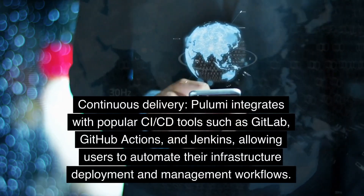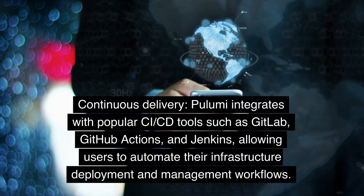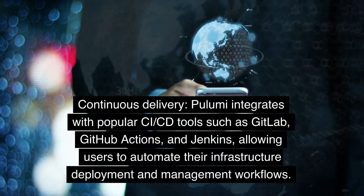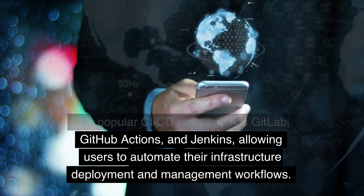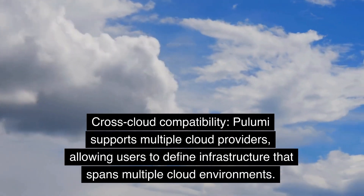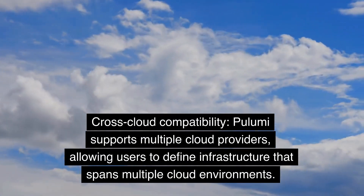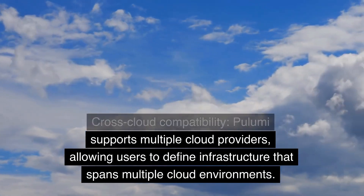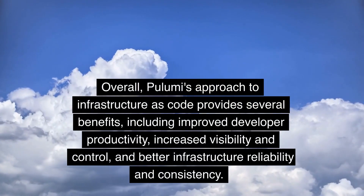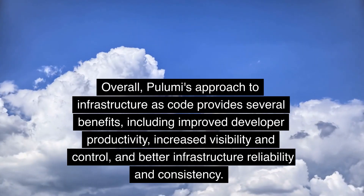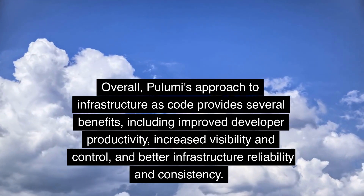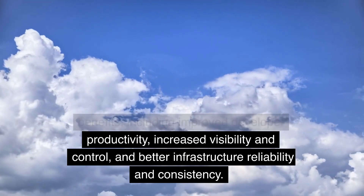Continuous delivery: Pulumi integrates with popular CI/CD tools such as GitLab, GitHub Actions, and Jenkins, allowing users to automate their infrastructure deployment and management workflows. Cross-cloud compatibility: Pulumi supports multiple cloud providers, allowing users to define infrastructure that spans multiple cloud environments. Overall, Pulumi's approach to infrastructure as code provides several benefits, including improved developer productivity, increased visibility and control, and better infrastructure reliability and consistency.